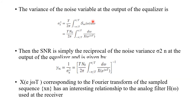The variance of the noise at the output of the equalizer is σn² = (T/2π) ∫ Snn(ω) dω, substituting Snn gives σn² = N0 · (T/2π) ∫ 1/|X(e^jωT)|² dω. The signal-to-noise ratio is the reciprocal of the noise variance: γ∞ = 1/σn², and X(e^jωT) has an interesting relationship to the analog receiver filter H(ω).